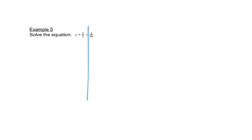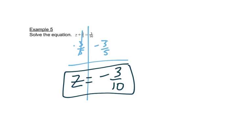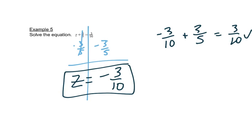I'll draw my line straight down through here. It says plus 3/5, so I'm going to subtract 3/5 from both sides. On the right, that cancels out and leaves me with just z. Three-tenths minus three-fifths equals negative three-tenths. That's my answer. I can check it — putting negative 3/10 in place of z and adding 3/5, I get 3/10. It checks.